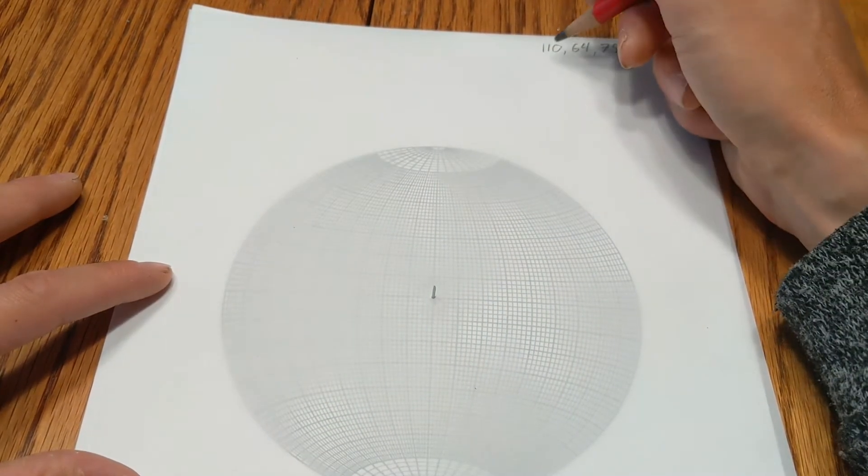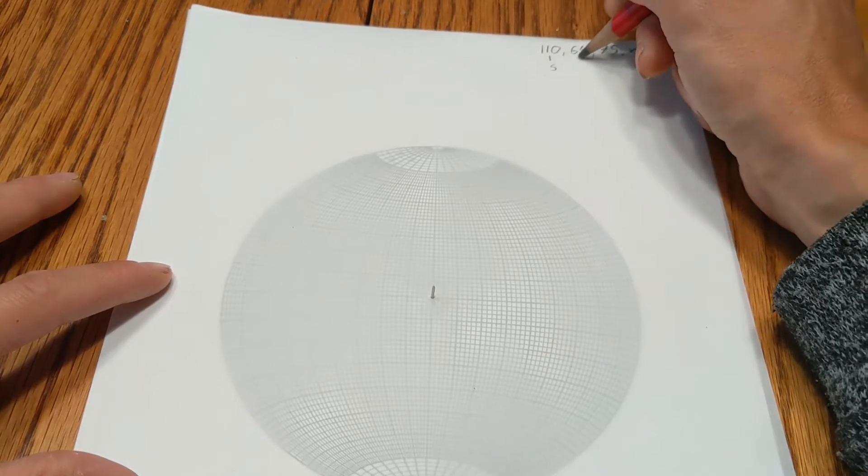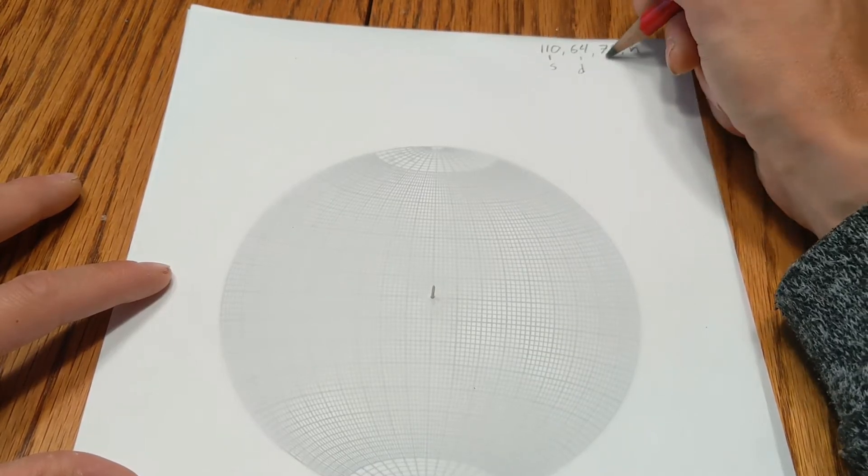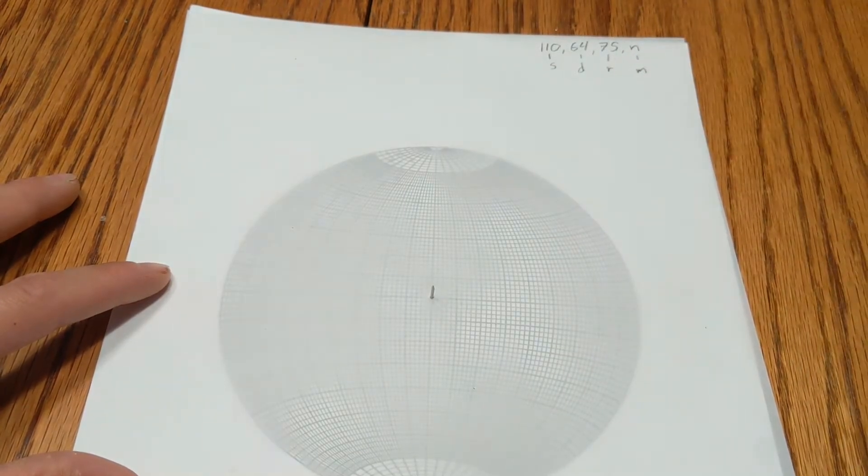And I don't have it written down here, you can write this down if you want, but that first number is the strike, the second number is the dip, the third number is the rake, and then that letter, that's the fault motion.